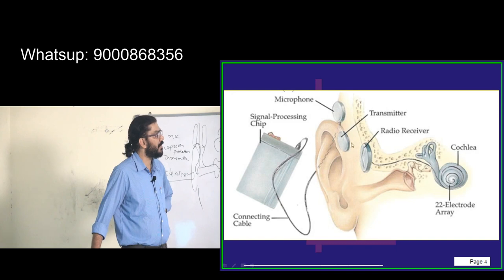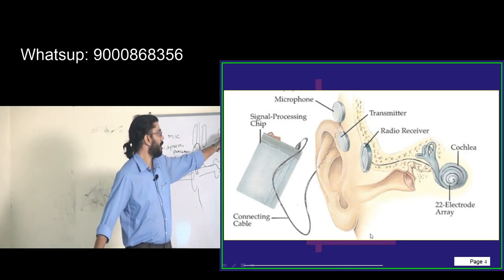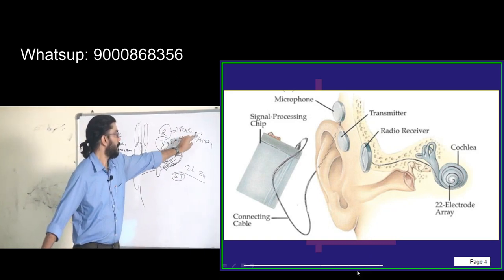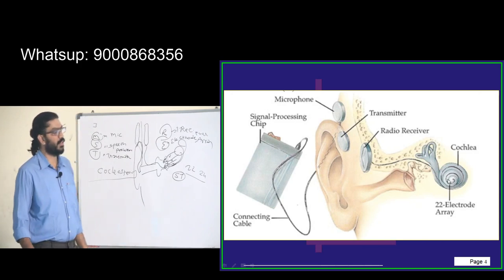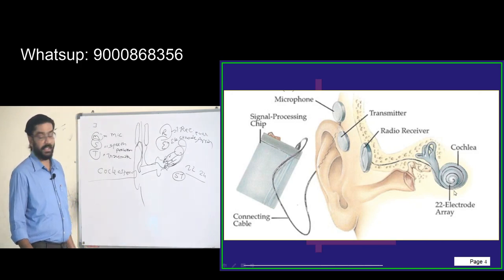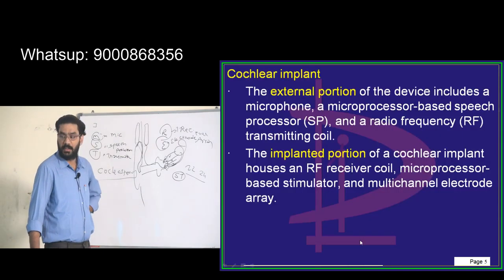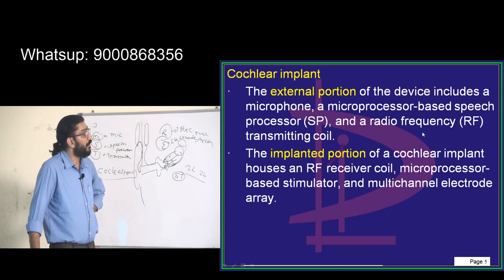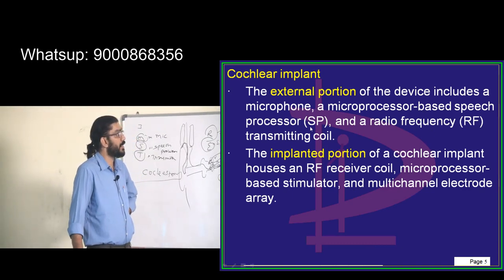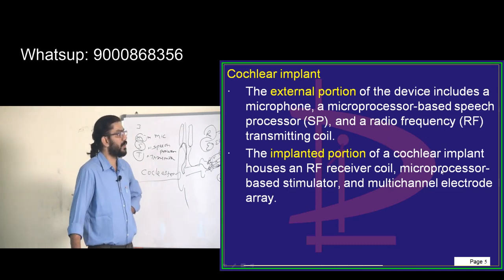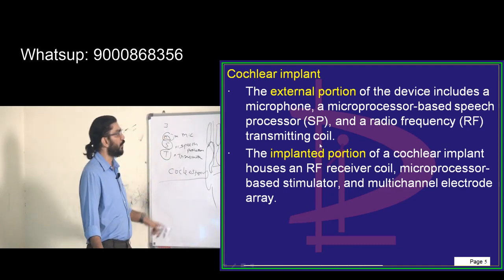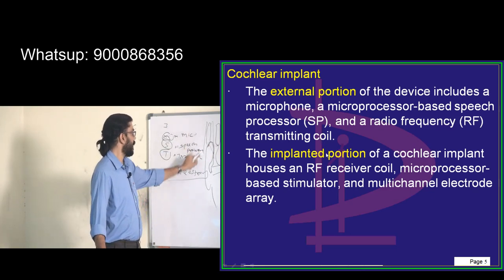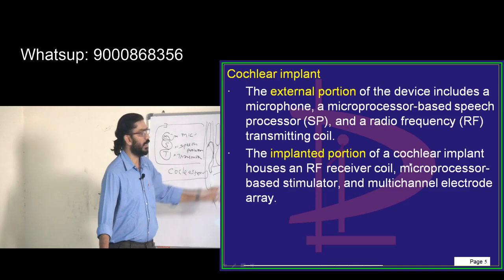The microphone feeds into the signal processing chip — that is the speech processor — then a connecting cable leads to the transmitter externally, and the receiver internally. The electrode array connects from the receiver inside. The external portion includes microphone, speech processor, and radio-frequency transmitter coil. The implanted portion has a receiver coil, microprocessor stimulator, and multi-channel electrode array.